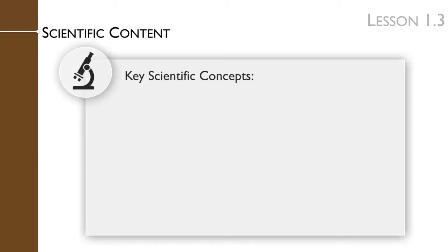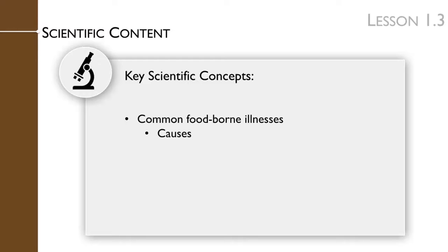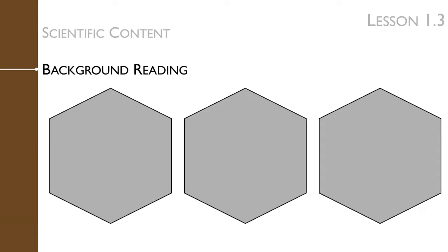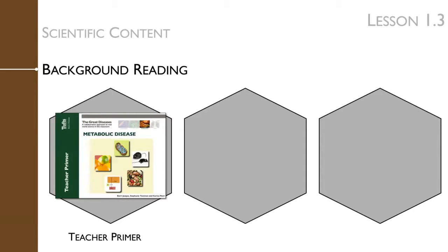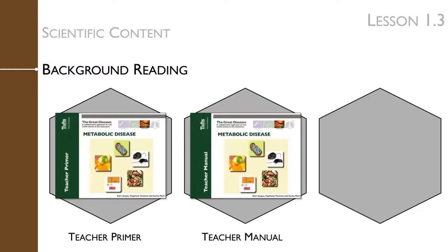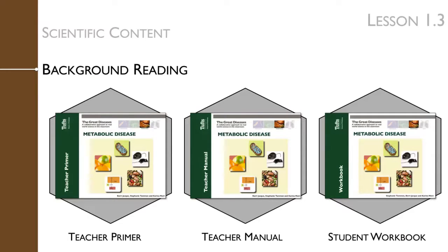To prepare for this lesson, you will need to review the key scientific concepts that will be presented throughout the lesson. They include the common foodborne illnesses, what causes them, and how they can be prevented. You can review the scientific content in the background reading provided in the teacher primer, the teacher manual, and the student workbook.